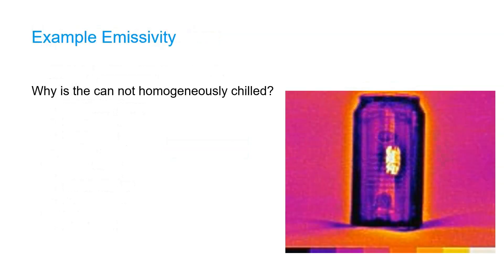Let's have a look at an example. Here we took a thermal image from a can that was 24 hours in the fridge. We can assume that it's at thermal equilibrium. However, from the image we can see that the can is not homogeneously chilled. The question is why this is the case.